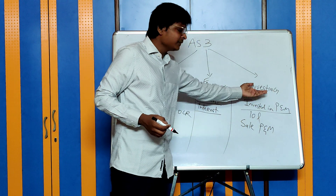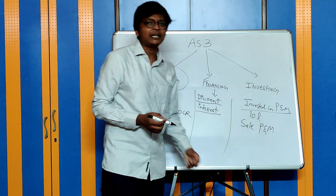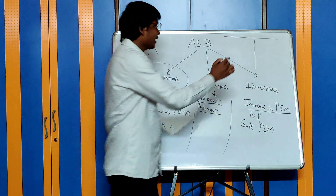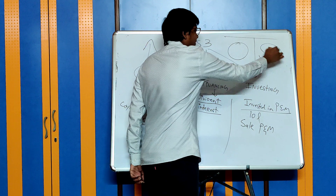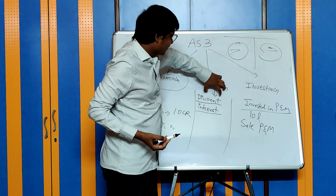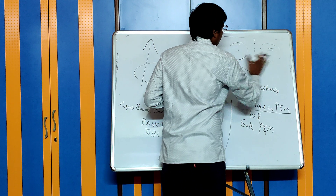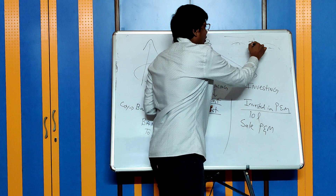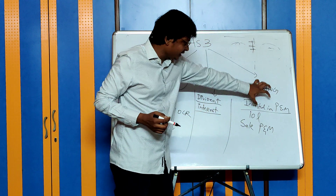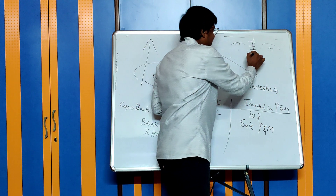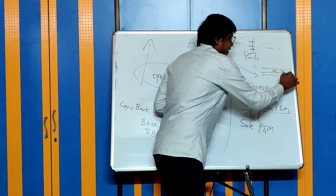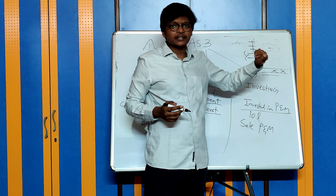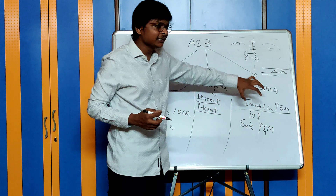How do we prepare the statement for investing and financing activities? It is very simple — just like a cash account where you debit all receipts and credit all payments. For financing and investing activities, instead of an account, we prepare a statement. First, we write all cash inflows, then all utilization of cash, and show the balance — either cash generated or cash utilized from financing or investing activities.